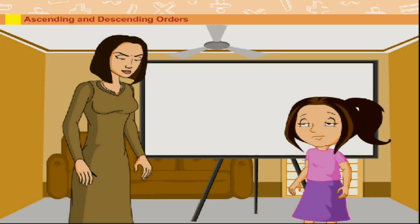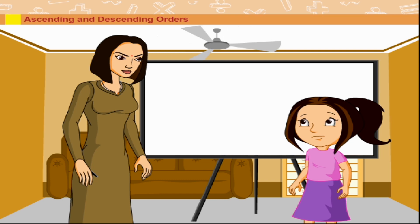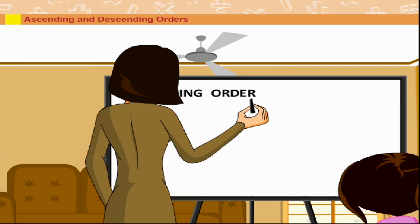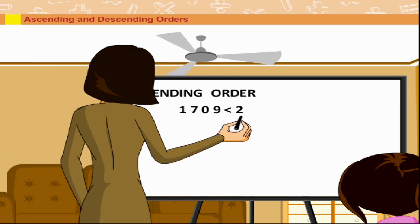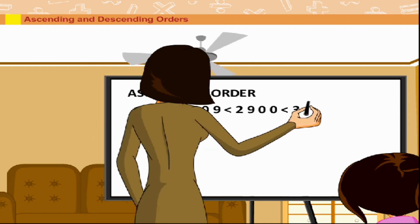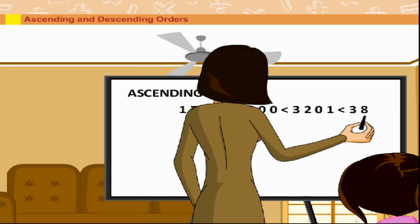Ascending and Descending Order. Mother explains to her that when we arrange the numbers in increasing order, we say that the numbers are arranged in ascending order. For example, 1709 is less than 2900 is less than 3201 is less than 3896.